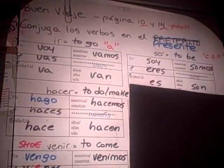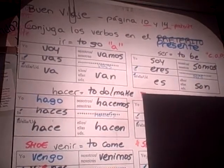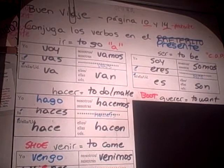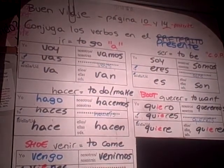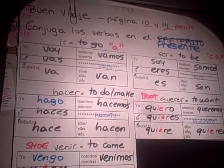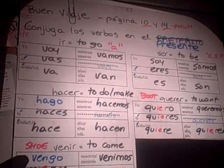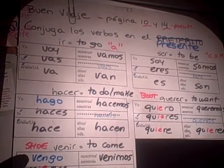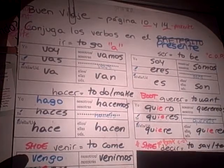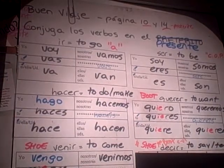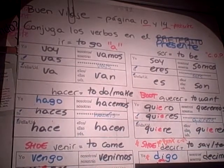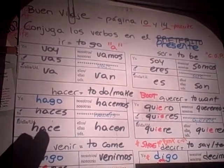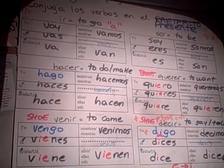For ser, it's completely irregular - it is soy, eres, es, somos, son. For querer in the present tense, it changes e to ie in the boot. This is a true shoe verb because the yo form does not have the stem change. I also call venir a shoe verb, although it's not really a true shoe, because it also changes the stem from e to ie and it has a go change. I still call it a shoe to help you remember something extra about the yo form, but the rest of your shoe shape changes from e to ie.